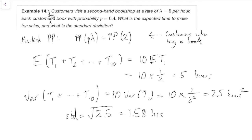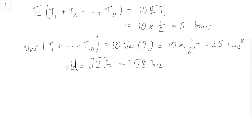Note that we couldn't have done that with the old Poisson definition, because that was all about arrivals in a fixed amount of time. Whereas this was a fixed number of arrivals — specifically 10 — and we were looking at the random amount of time. And that's where the exponential distribution is useful.